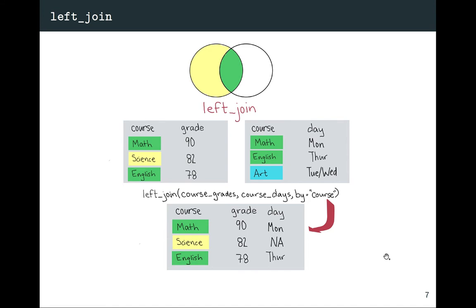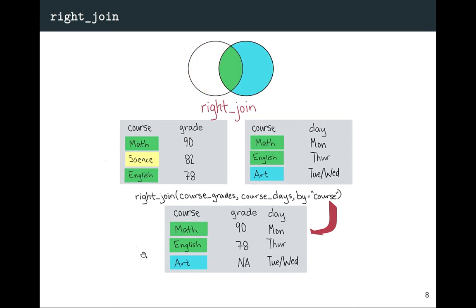The next two joins let you keep everything in one data frame but only keep things in the other that have a match. A left_join keeps everything that an inner_join would, and also anything that shows up in the left-hand data frame but not the right. So in this case, we'd keep Science because it shows up in the left data frame, but Art, which only shows up in the right, is dropped. A right_join works exactly the opposite — it only keeps things from the right-hand side.